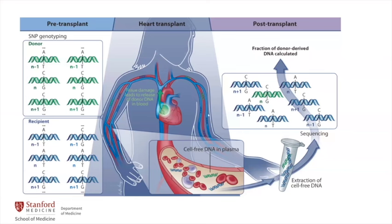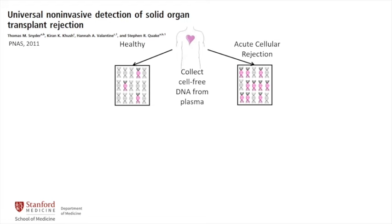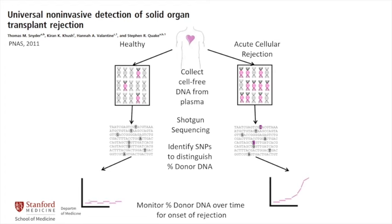Around 2007–2008, we started talking to Steve Quake about looking for donor DNA in the recipient's blood as a biomarker of acute rejection. We began with a small pilot study using banked samples from heart transplant patients with and without rejection. We collected cell-free DNA from banked plasma samples, sequenced it, and theorized that if we could identify differences in donor and recipient DNA and monitor it over time, we could detect increases in the setting of rejection.